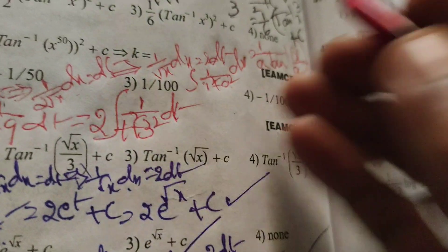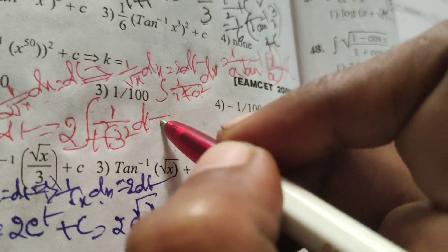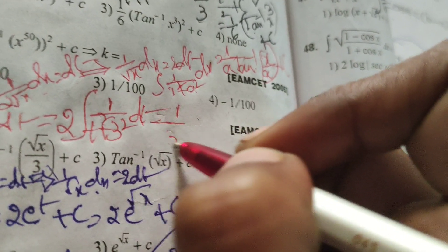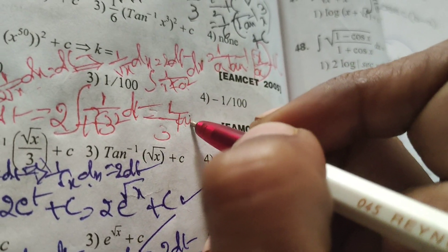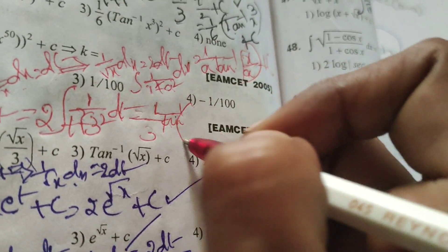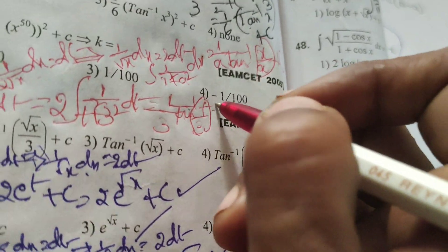Applying this formula: 1 by a, that is 1 by 3, times tan inverse of x by a, which is tan inverse of t by 3 plus c.